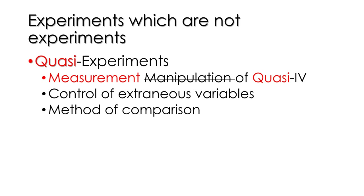Quasi is a term that means somewhat or kind of, so quasi-experiments are kind of like experiments, but not really. What's going on is we still have an independent variable, but instead of manipulating it, we're measuring it. This change from manipulation to measuring makes the IV a quasi-independent variable.